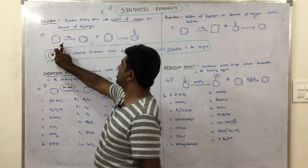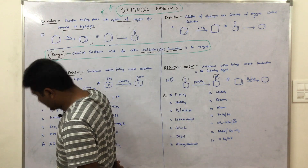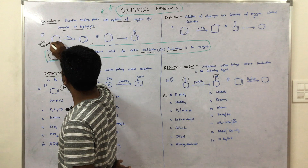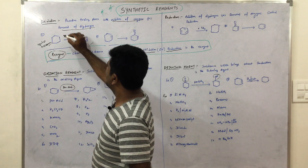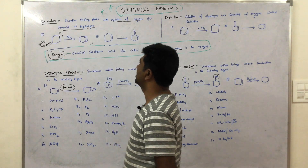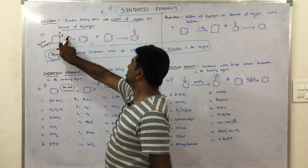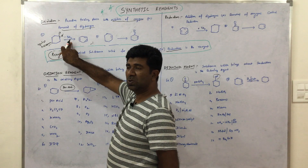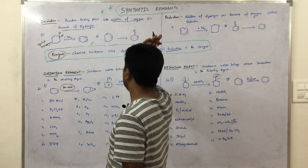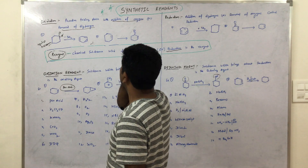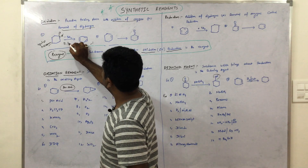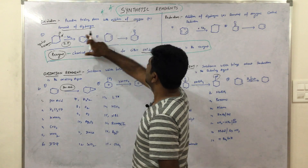For example, this one — this is cyclohexane. Here each and every carbon has two hydrogens. What I am doing is removing three moles of hydrogen, that means three moles times two hydrogens — six hydrogens removed — and this is the product. So removal of hydrogens is taking place here.